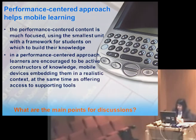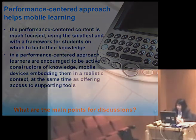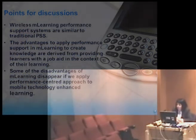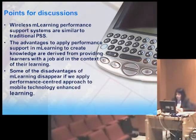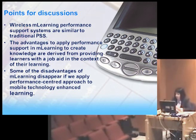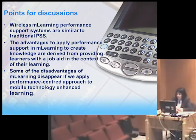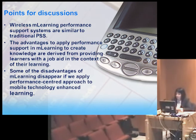In conclusion, the main points for discussion are: wireless m-learning performance support systems are similar to traditional performance support systems. The advantages of applying performance support in m-learning to create knowledge are derived from providing learners with a job aid in the context of their learning. Some of the disadvantages of m-learning disappear if we apply the performance center approach to mobile technology enhanced learning. M-learning solutions integrate mobile devices with the learning to help the student perform a task by providing information, guidance, and learning experiences when and where they are needed.